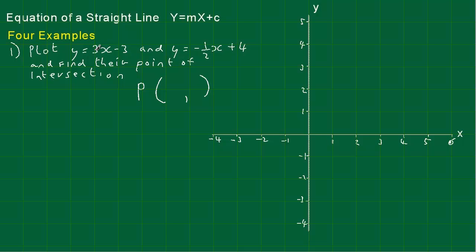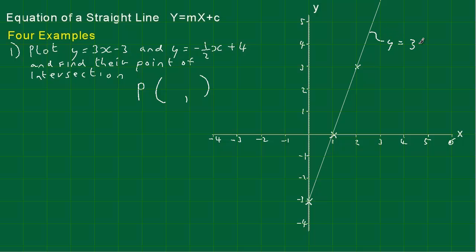Let's plot y equals 3x minus 3 first. Look at the minus 3 — that's the y-intercept, so let me put that in. The gradient is 3, so every time we go along 1 on the x we go up 3. Along 1, up 3. Along 1 again, up 3. That should be good enough. Pop that line in and label it y equals 3x minus 3.